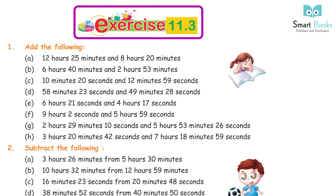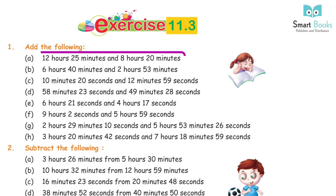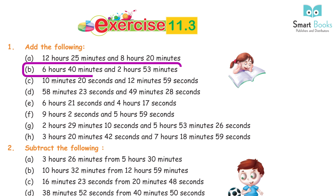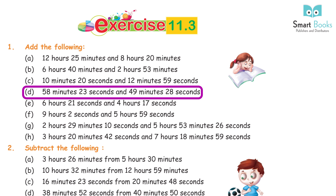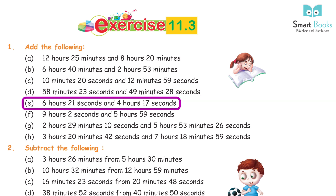Exercise 11.3, Question 1: Add the following. A. 12 hours 25 minutes + 8 hours 20 minutes = 20 hours 45 minutes. B. 6 hours 40 minutes + 2 hours 53 minutes = 9 hours 33 minutes. C. 10 minutes 20 seconds + 12 minutes 59 seconds = 23 minutes 19 seconds. D. 58 minutes 23 seconds + 49 minutes 28 seconds = 1 hour 47 minutes 51 seconds. E. 6 hours 21 seconds + 4 hours 17 seconds = 10 hours 38 seconds.